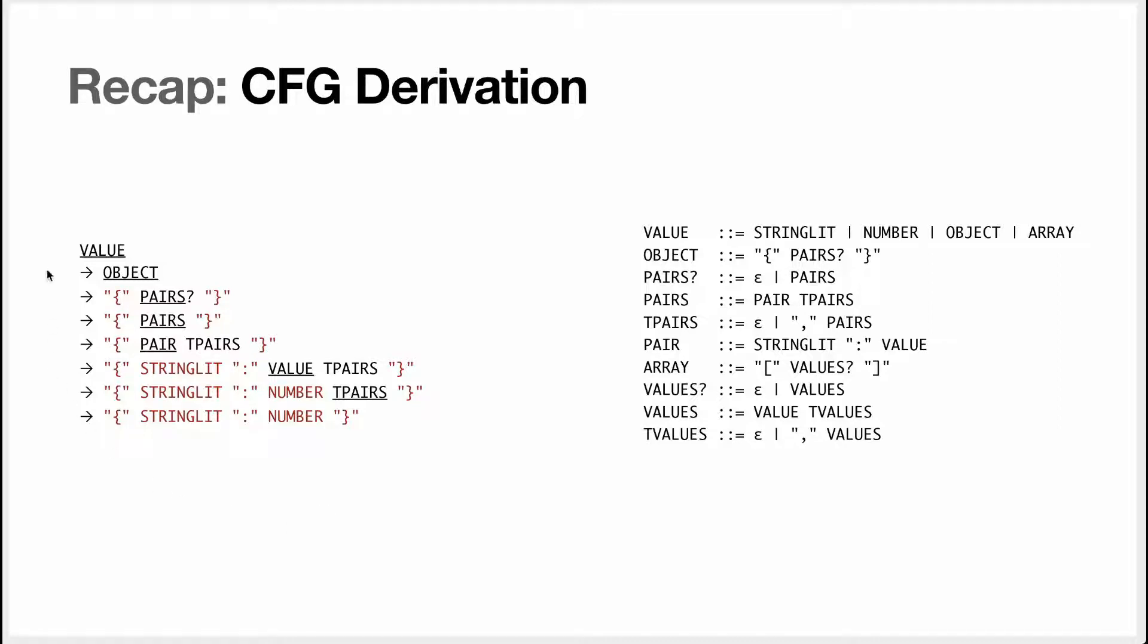We had an example of derivation here. Basically what we do is start by the starting symbol and at each step we replace one non-terminal, it doesn't matter which one, by its right hand side or one of its right hand sides.